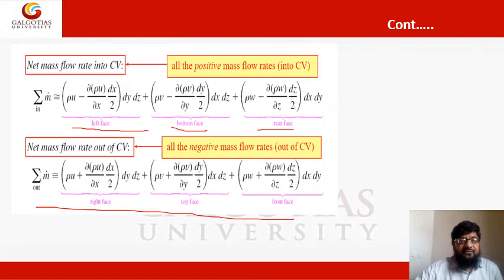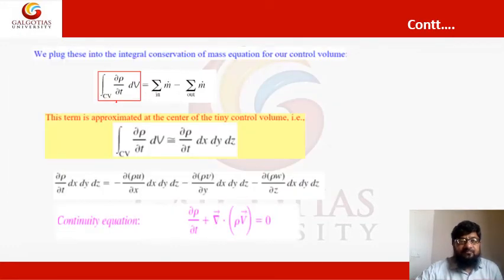Net rate of mass flow into or out of the control volume will be all positive mass flow rate minus all negative mass flow rate.